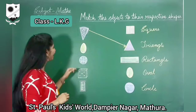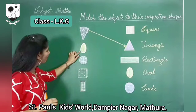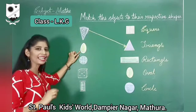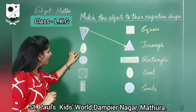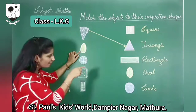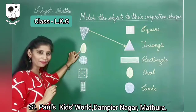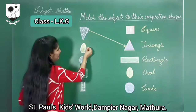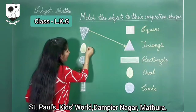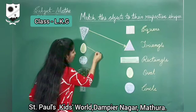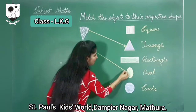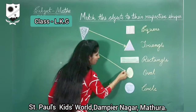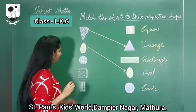What is this? This is an egg and this looks like an oval shape. Match these objects with their respective shape. Oval shape.